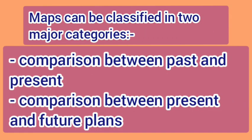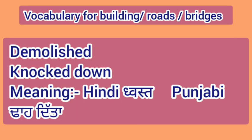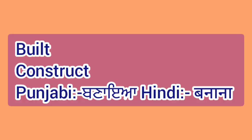First of all, the map has two different question types. One is the past and the present, which compares the first map — for example in the 1980s — and the present. The other type involves the present and future. Key vocabulary includes: built and construct.